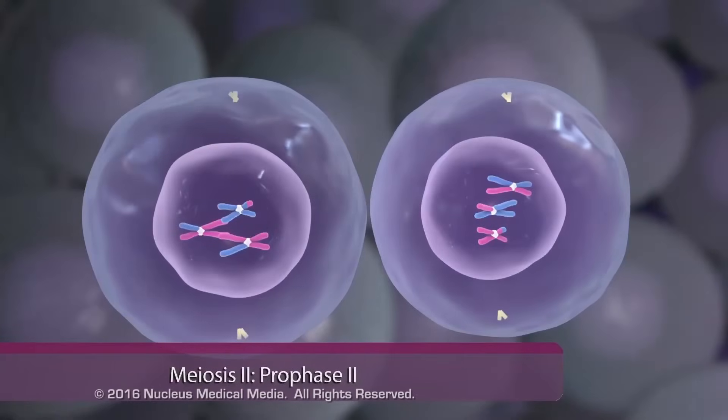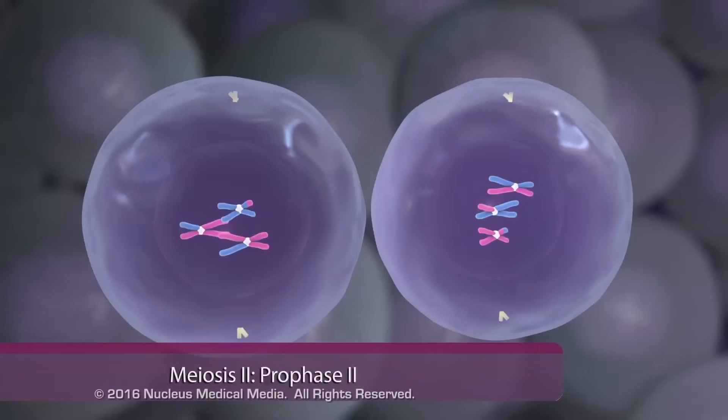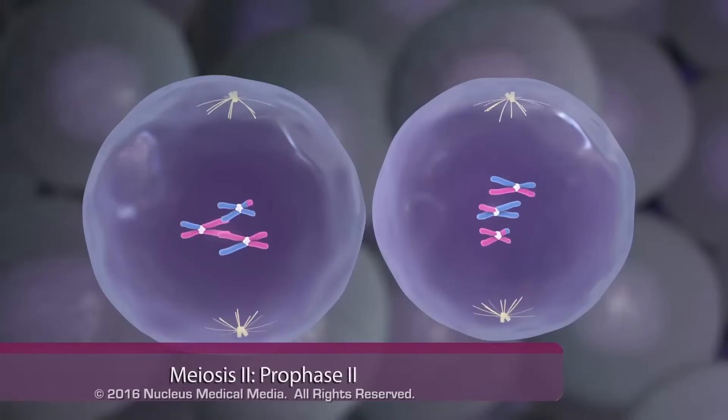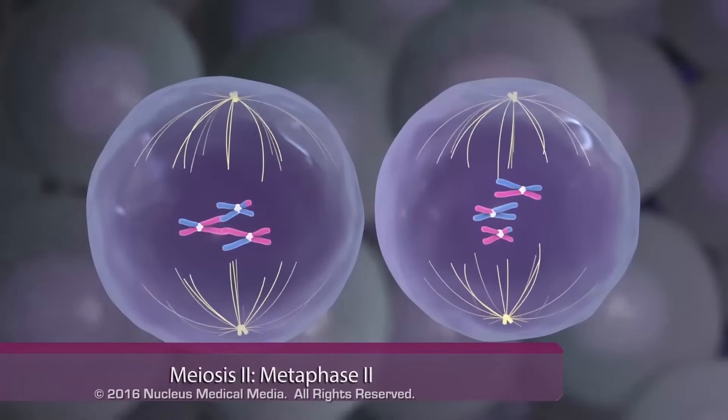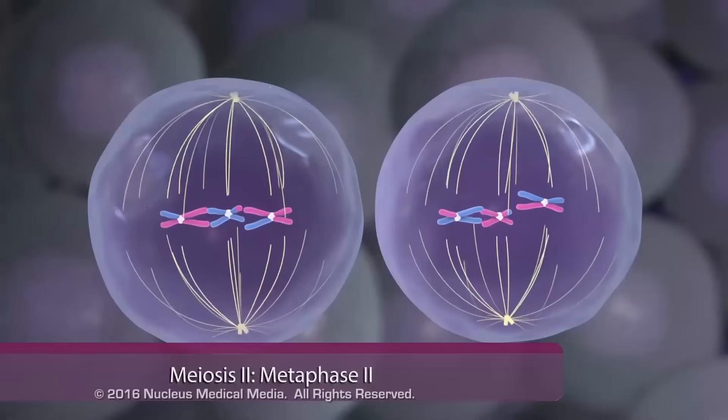The second meiotic division, or meiosis II, begins with prophase II, during which the cell prepares to divide again. In metaphase II, the chromosomes line up in the center of the cell.